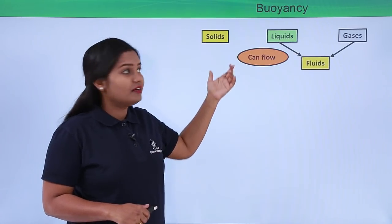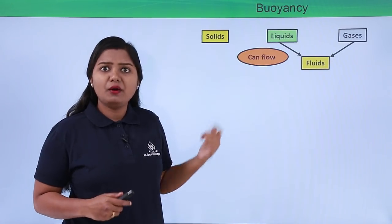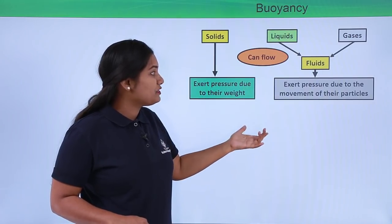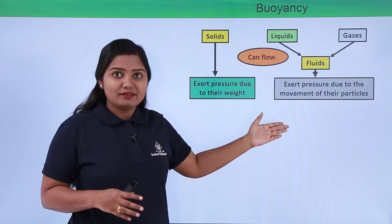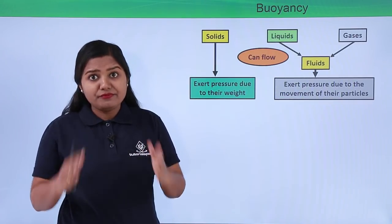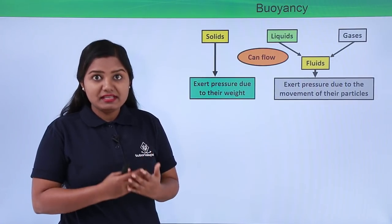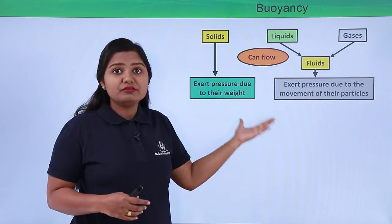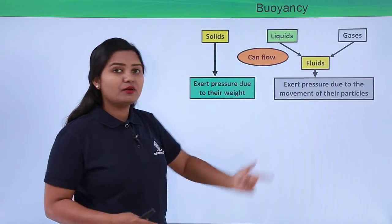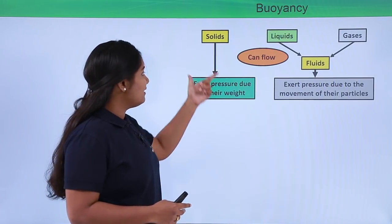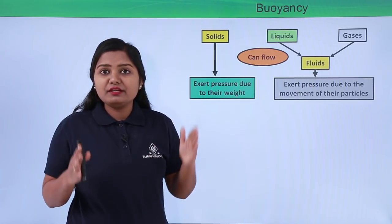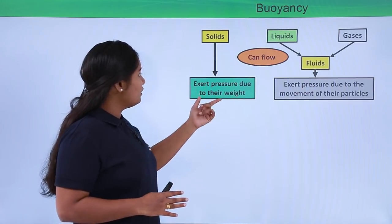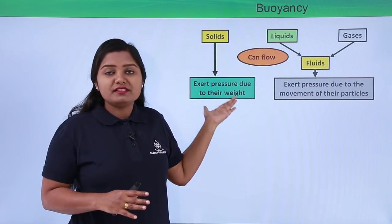Solids do not have that property, so we do not include solids in this category. Solids exert pressure due to their weight, while liquids exert pressure due to the movement of their particles. In fluids, particles are more or less free to wander from one place to another, so the pressure they exert is due to particle movement as well as the weight of the fluid. Solids can exert pressure only due to their weight because the particles in a solid are not free to move — their positions are fixed, so there is no pressure from particle movement.